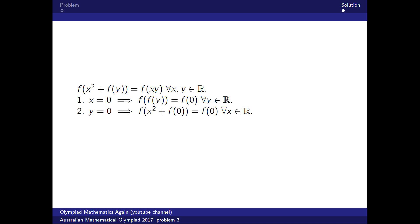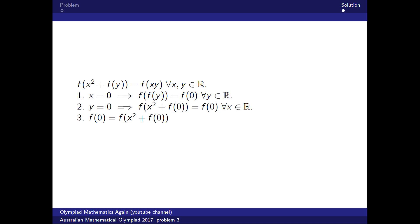Let's examine the second condition we obtained. We rewrite it by reversing left and right sides, then replace f of zero with f of f of y — this comes from point one. Notice that here we introduce an additional variable y, and so this holds for any y, even though there was no y on the left side.